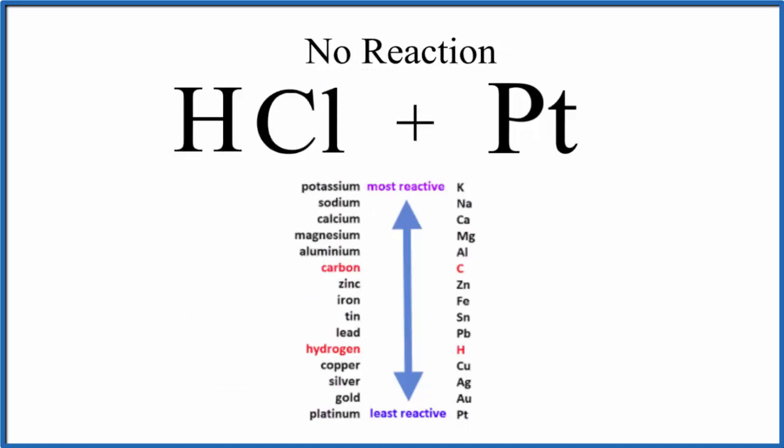The activity series is really helpful in determining whether single displacement reactions will actually happen. We will look up the metal or hydrogen. We can see, based on their placement in the table, which one can replace the other.